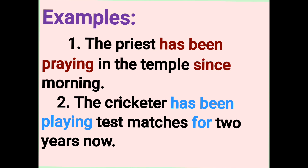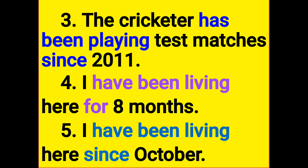Past, present, and future will continue with this tense. Third example: The cricketer has been playing test matches since 2011. Fourth example: I have been living here for eight months. Fifth example: I have been living here since October — meaning from October onwards.